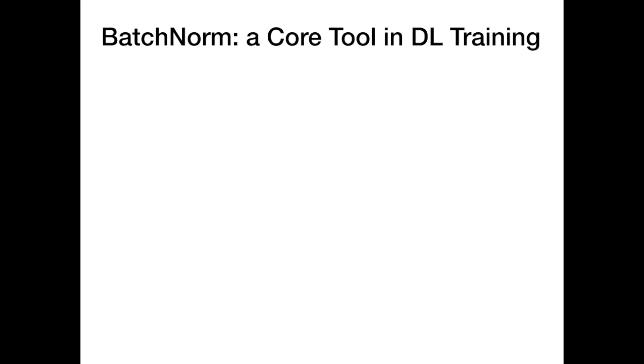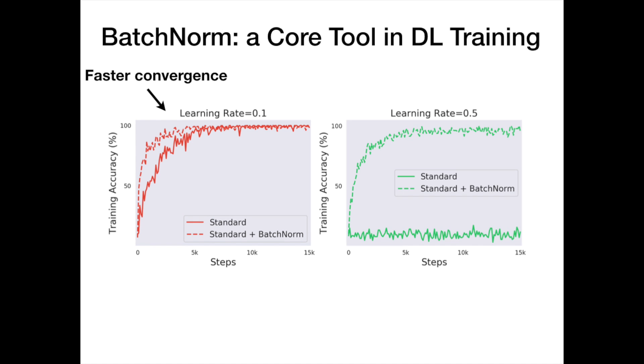Batch normalization is a widely used technique which is known to greatly help optimization in deep neural networks. Using batch norm leads to faster convergence and also lets us use higher learning rates than we can for non-normalized networks.